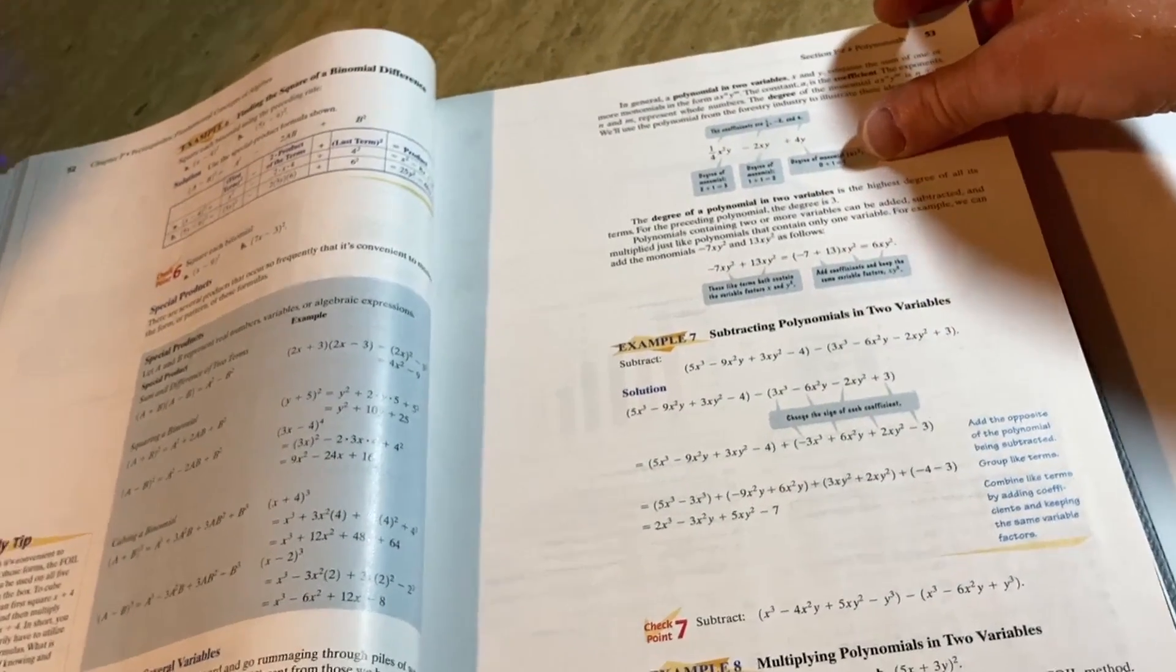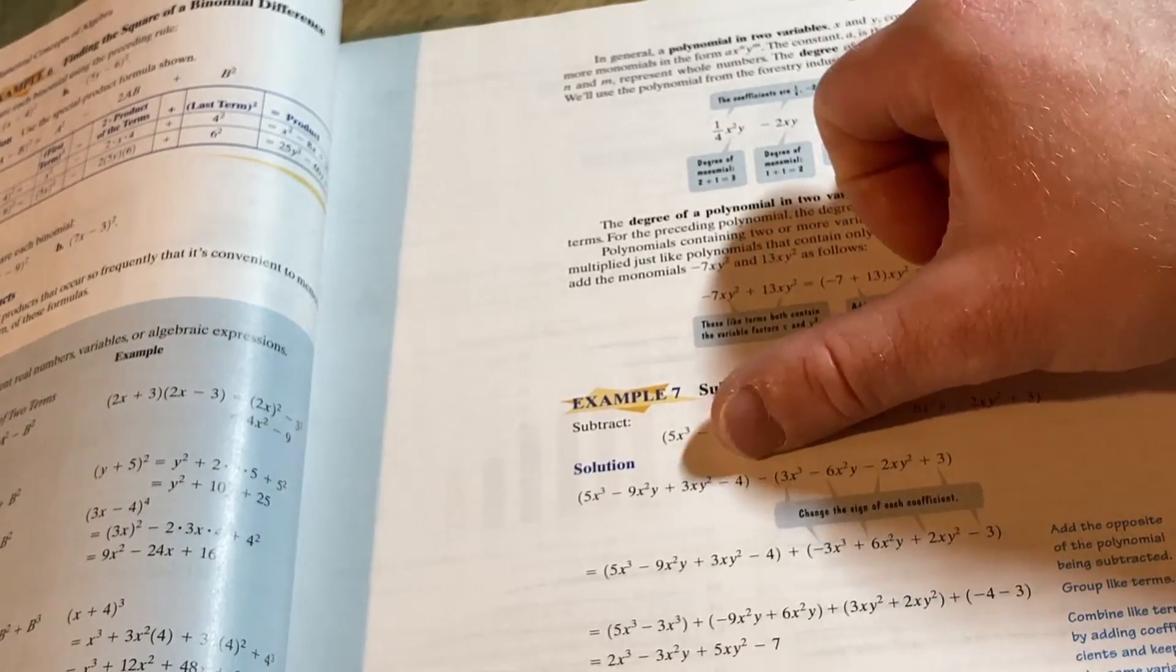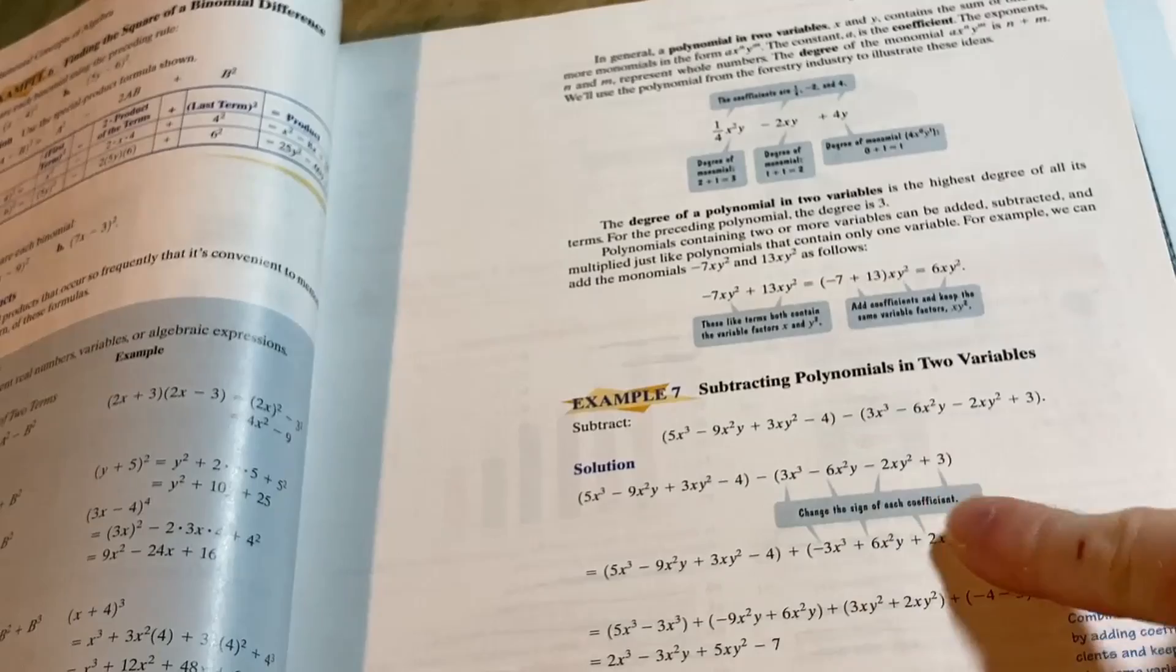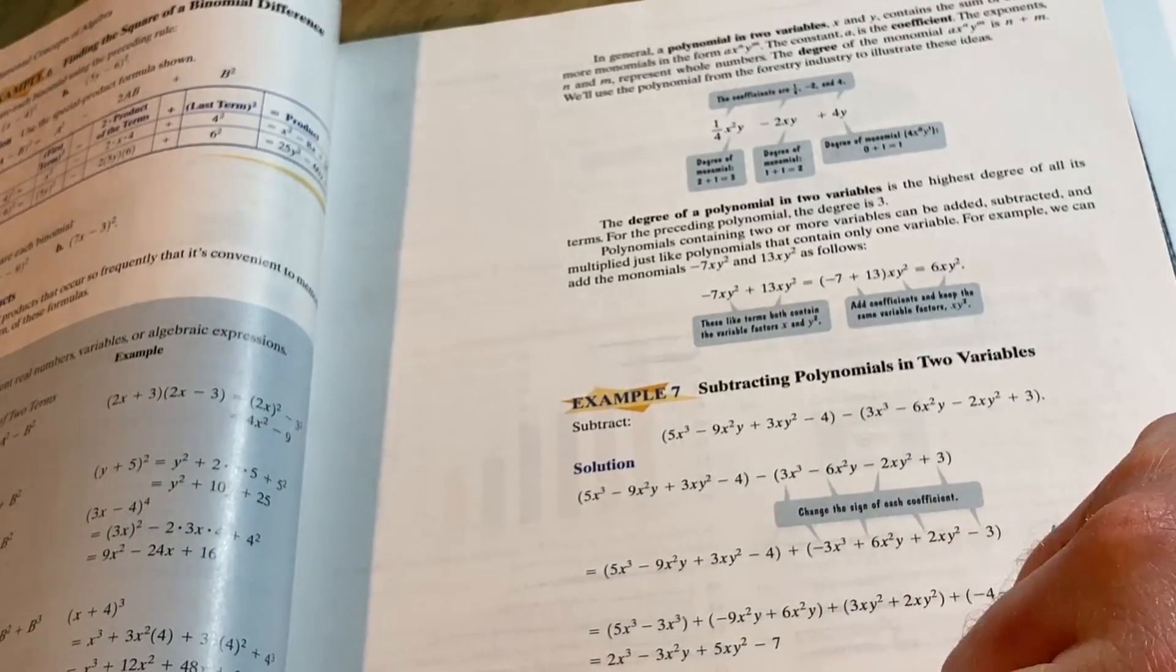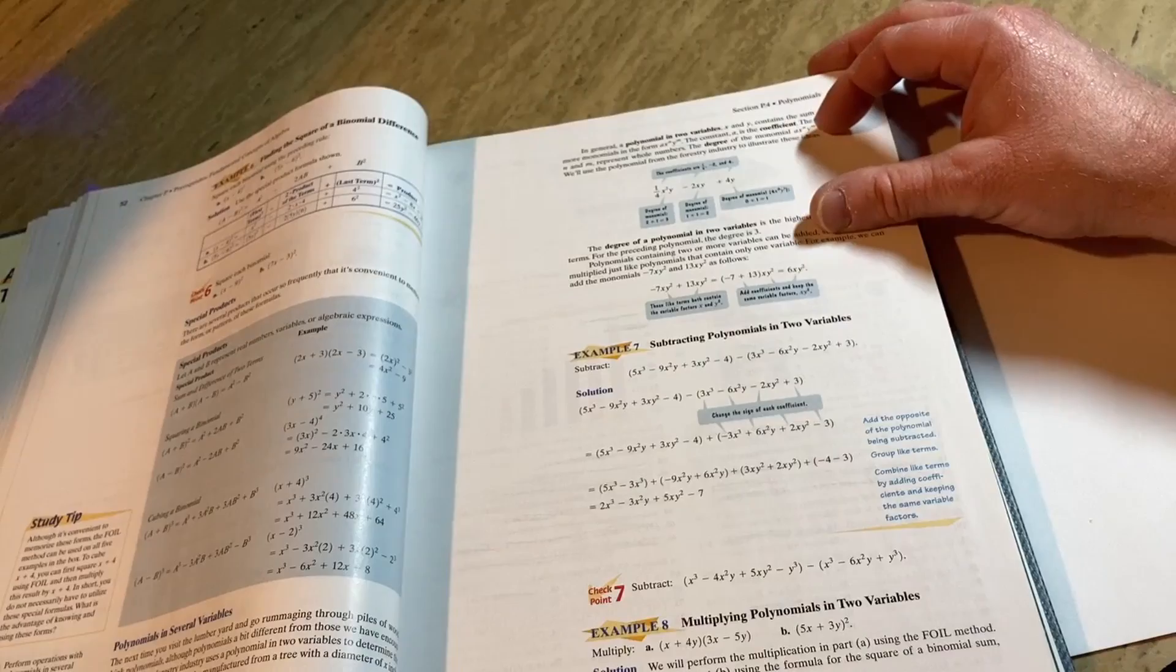Here we have an example of something easy. Subtracting polynomials in two variables. So you have a polynomial here and a polynomial here. And we just subtract them. It shows you what to do. It explains things, changing the sign, et cetera. So it tries to do the best it can. And it does a really good job.